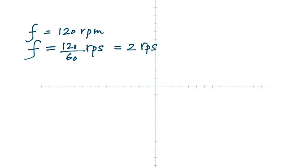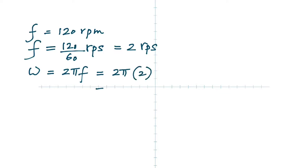Once you get f, you can find omega. Omega equals 2π times f, so that's 2π times 2, which is 4π. The unit is radians per second.